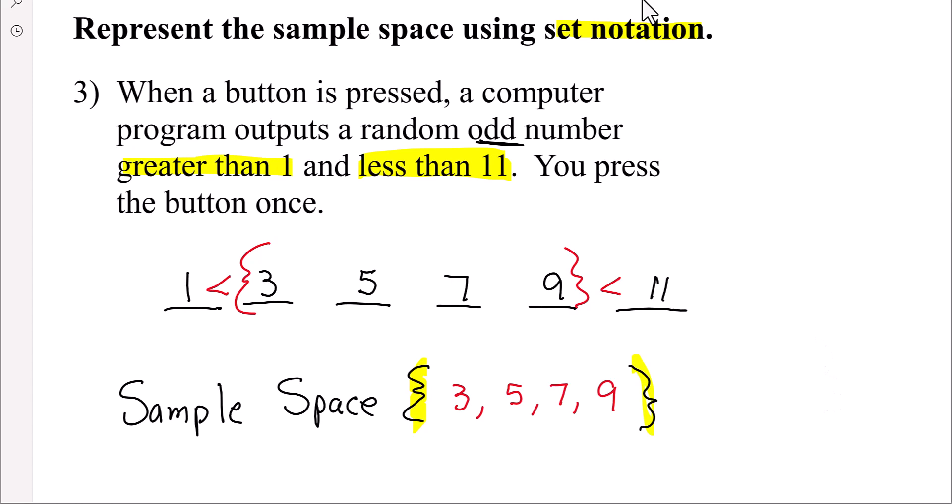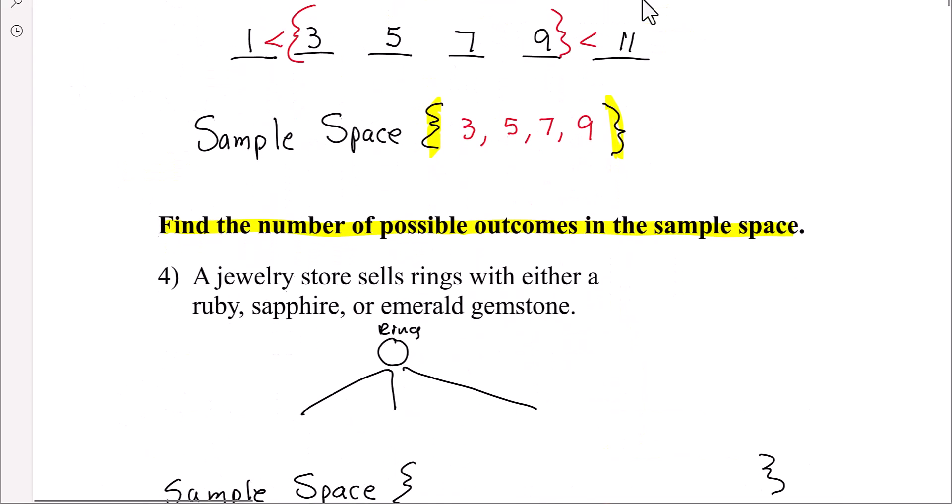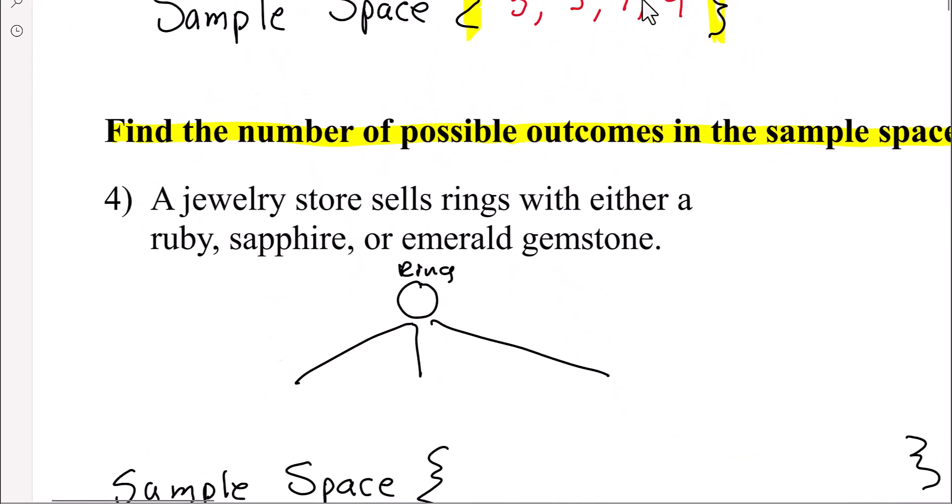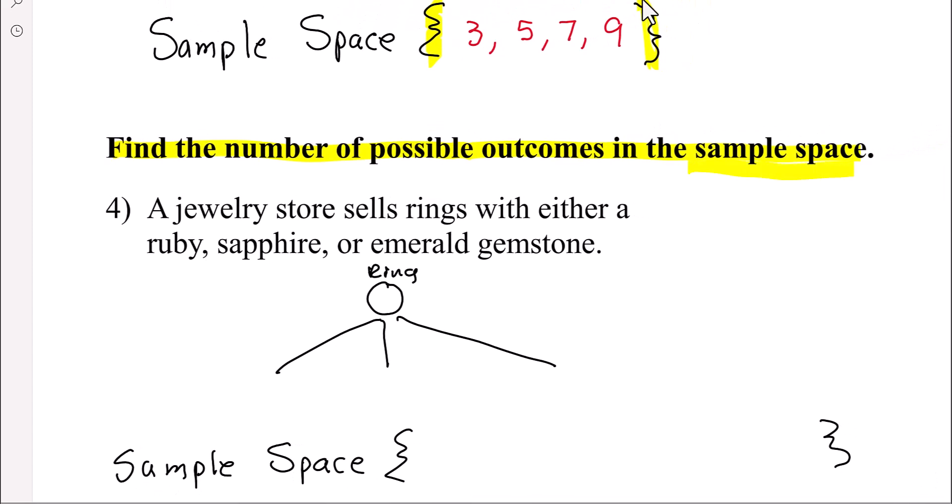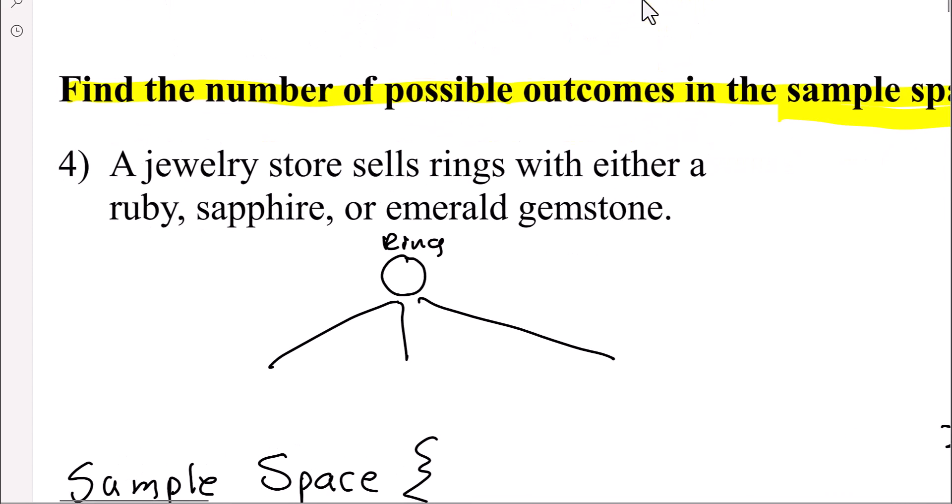So that's what it means by... Okay, now. Find the number of possible outcomes using the sample space. So what I would want to see on your paper is a jewelry store sells rings. So here's an example of a ring with either a ruby, a sapphire, or an emerald. Well, how many choices is that? That's 3. So when it says find the number, and then this is set notation.